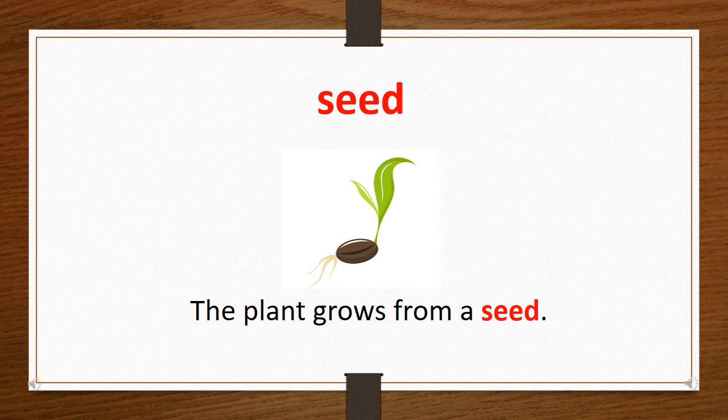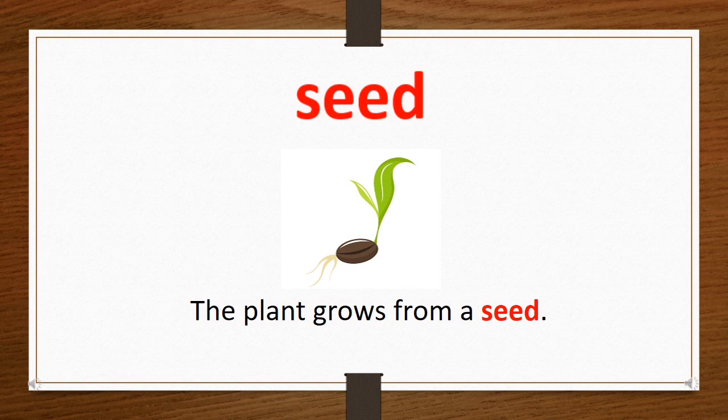The word is 'seed.' Children, we all know that a plant generally grows from a seed. So let's use seed in a sentence: The plant grows from a seed.